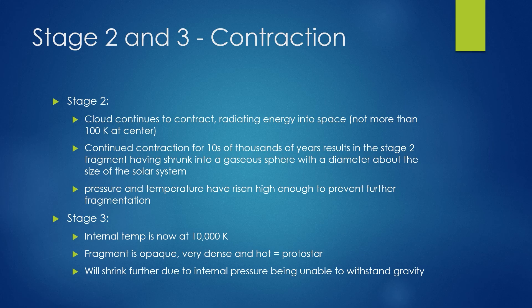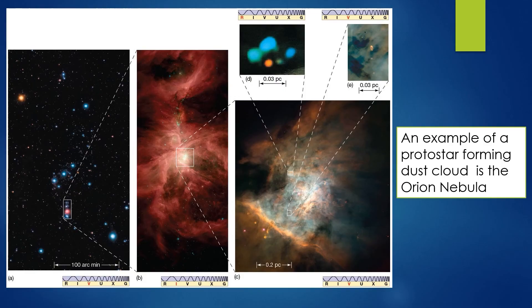At stage three, the fragment is opaque at its center, very dense and hot, and it is now called a protostar. The protostar will continue to shrink due to its internal pressure not yet being able to withstand the force of gravity. By the end of stage three, the protostar is visible. An example of a protostar-forming dust cloud is the Orion Nebula, near Orion's belt in the Orion constellation. The nebula itself is shown in picture two, and in picture three we can see a bunch of baby stars or protostars.